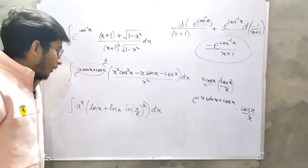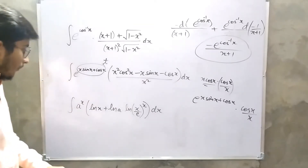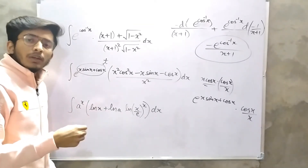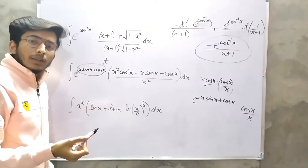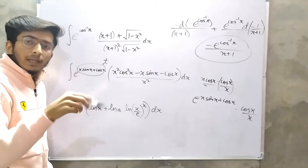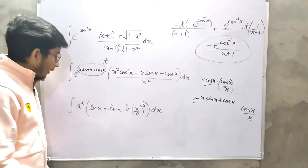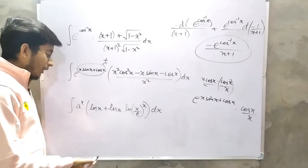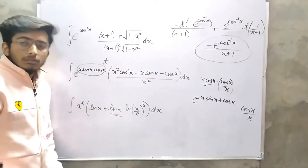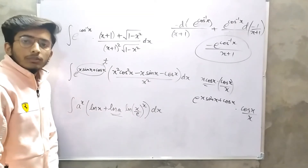Now we have a to the power x. Think about it: a to the power x, multiplied by ln x. How did ln x come? That's the question.